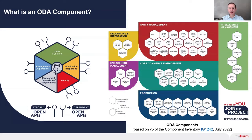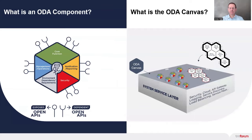The other colored segments of the hexagon deal with security, observability, and other aspects of management and operations. These relate to the deployment of components onto the standardized ODA canvas. The components are deployed onto the canvas, which provides an execution environment, but which also exposes common services used by all components for things like security, observability, identity and access management, and so on.